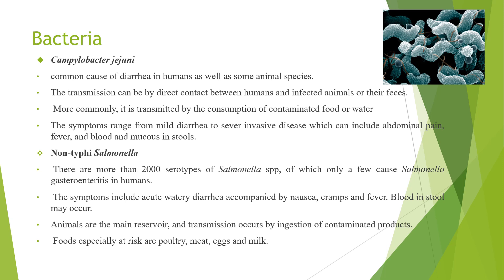Now we will see the different genera of bacteria associated with food. First is Campylobacter jejuni, a common cause of diarrhea in humans as well as some animal species. Transmission can occur by direct contact between humans and infected animals or their feces, or more commonly by consumption of contaminated food or water. Symptoms range from mild diarrhea to severe invasive diseases including abdominal pain, fever, and blood and mucus in stools.